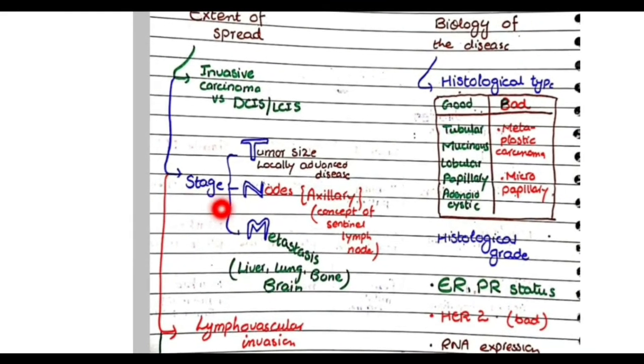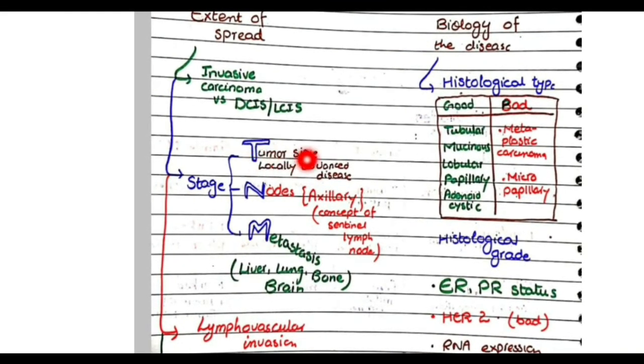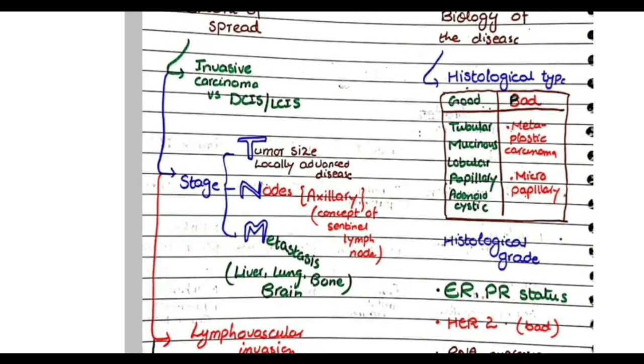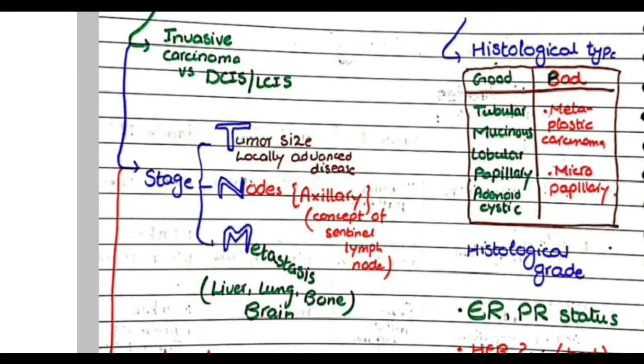Second thing is stage, which is related to TNM tumor size. If the size of tumor is large, it will have a worse prognosis. Similarly, if the tumor is locally advanced, meaning it is invading skin of the breast or chest wall, then again it will have a worse prognosis.